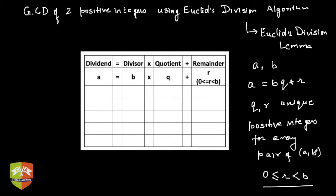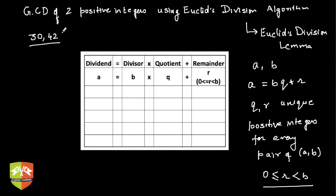We will be using this division lemma to find out GCD, which we also explained in our previous video where we used geometric interpretation of Euclid's division algorithm. For this we will go first with examples and then we will try to prove the method using a particular theorem later on. So first let us find out GCD of 30 and 42, which we found using the geometrical interpretation.